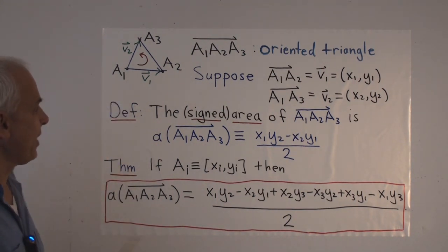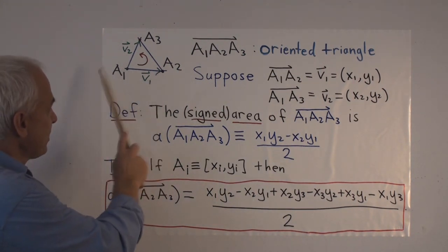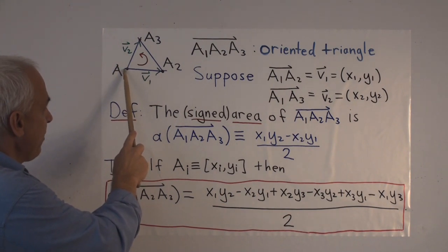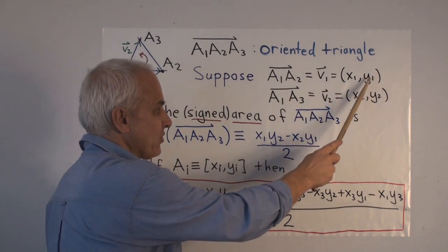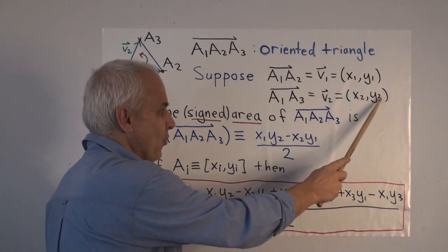So let's take that oriented triangle, and we'll consider these two vectors. V1 emanating there, V2 emanating there. We'll suppose that those vectors have coordinates X1, Y1, and X2, Y2.